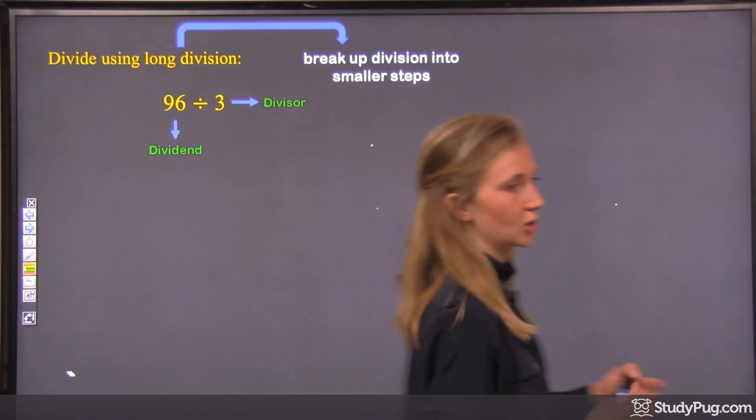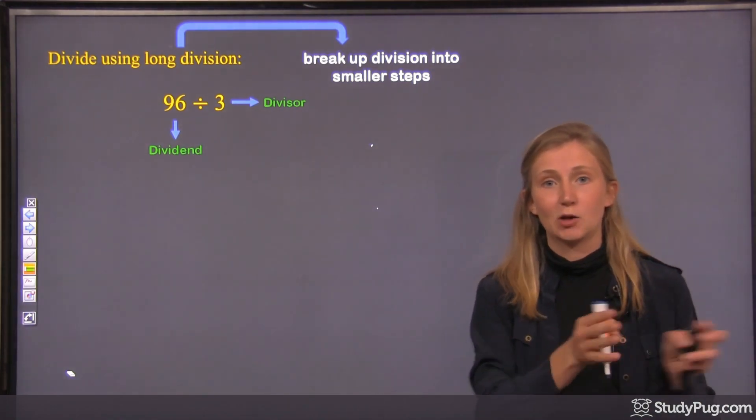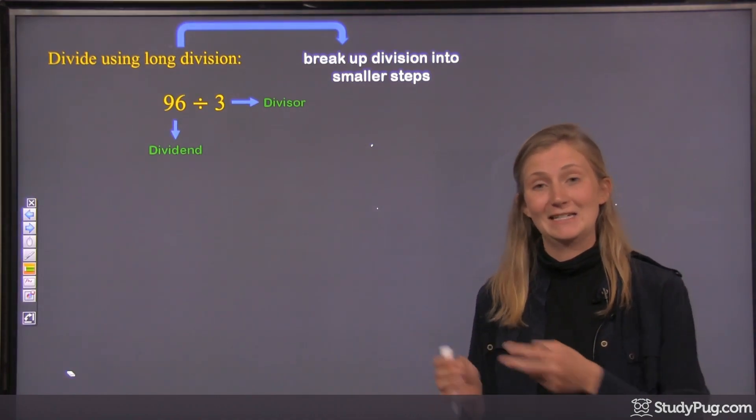So the dividend is the total number of things, and then the divisor is how many groups you're breaking them up into.